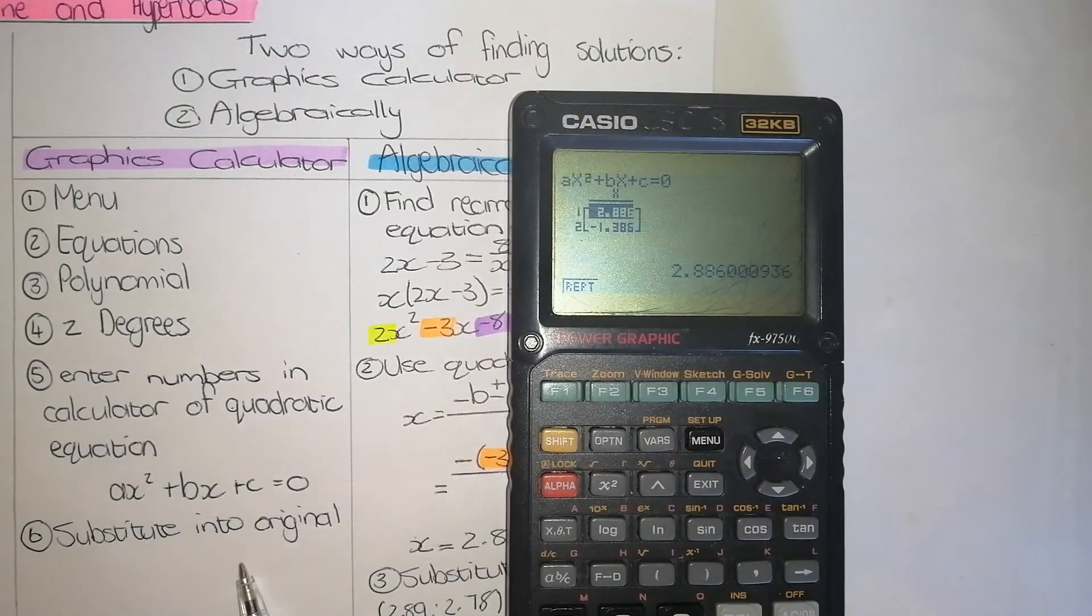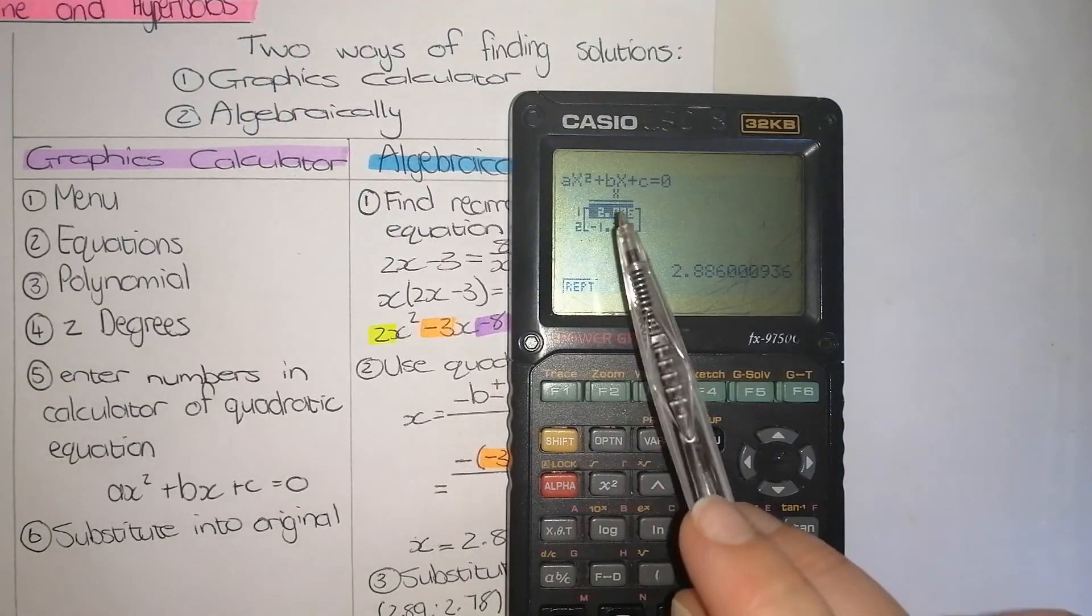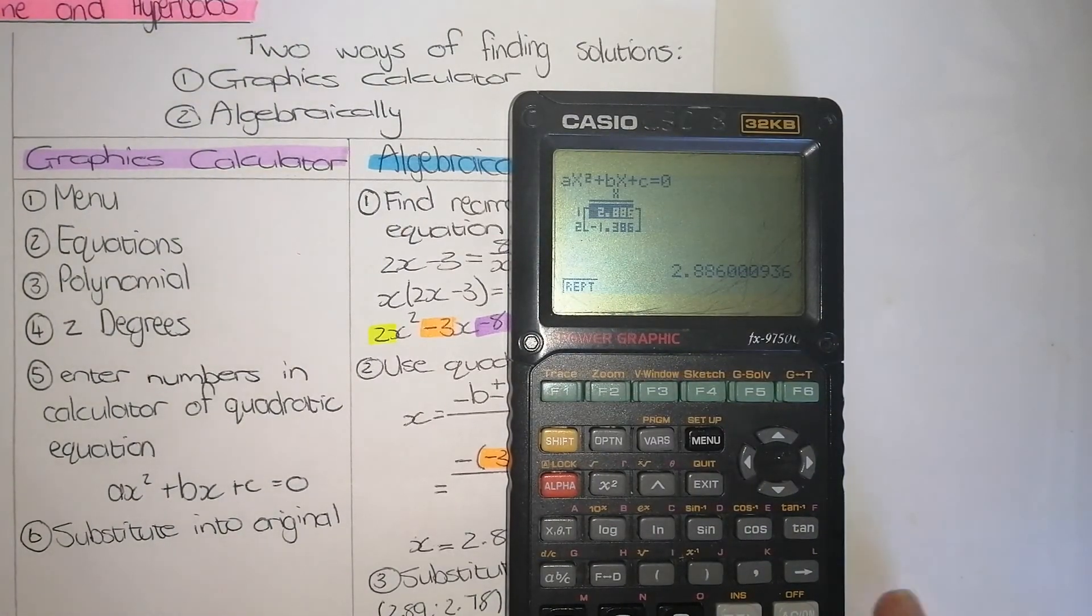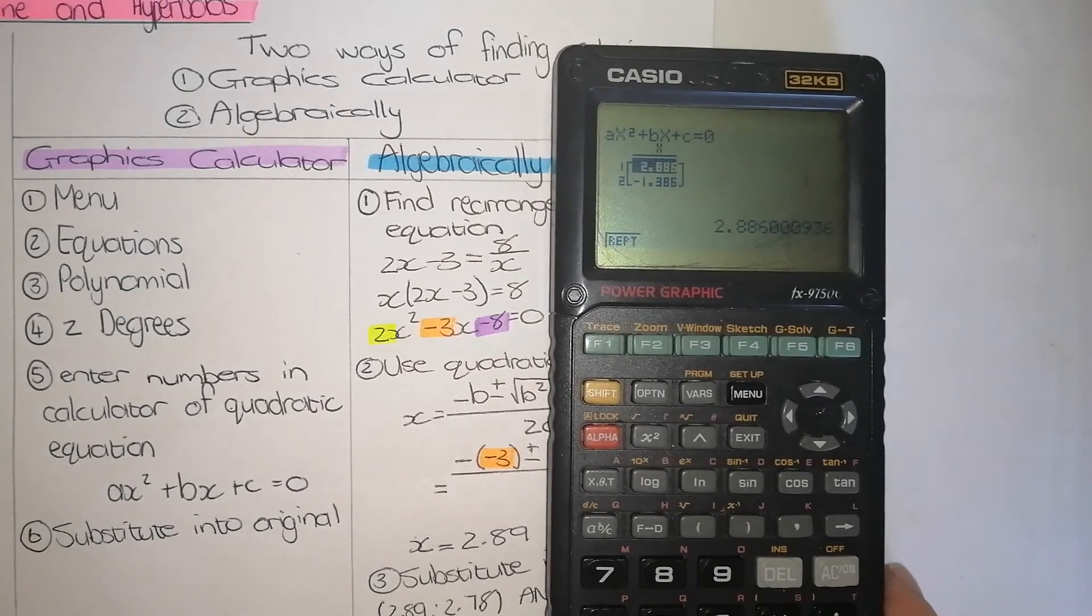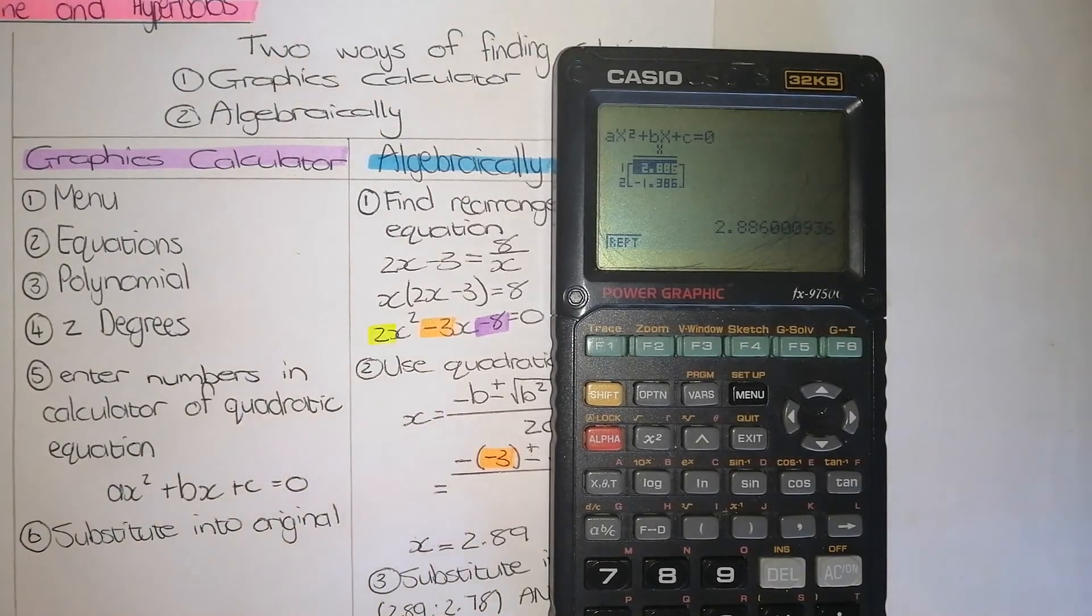The same step as number 3 in the algebraic one, which is substitute my two X values that I have found into one of my original equations. Once again, I would suggest you substitute it into the straight line equation because it's easier to find the answer. And this is how we find the point of intersection between a straight line and a hyperbola.